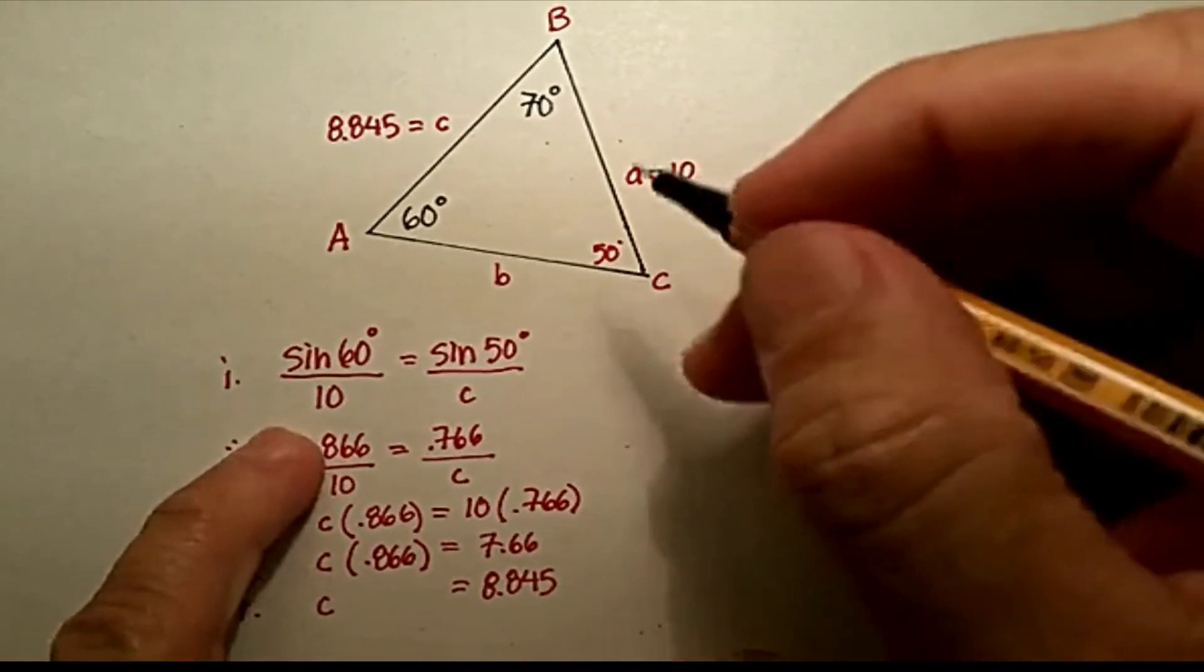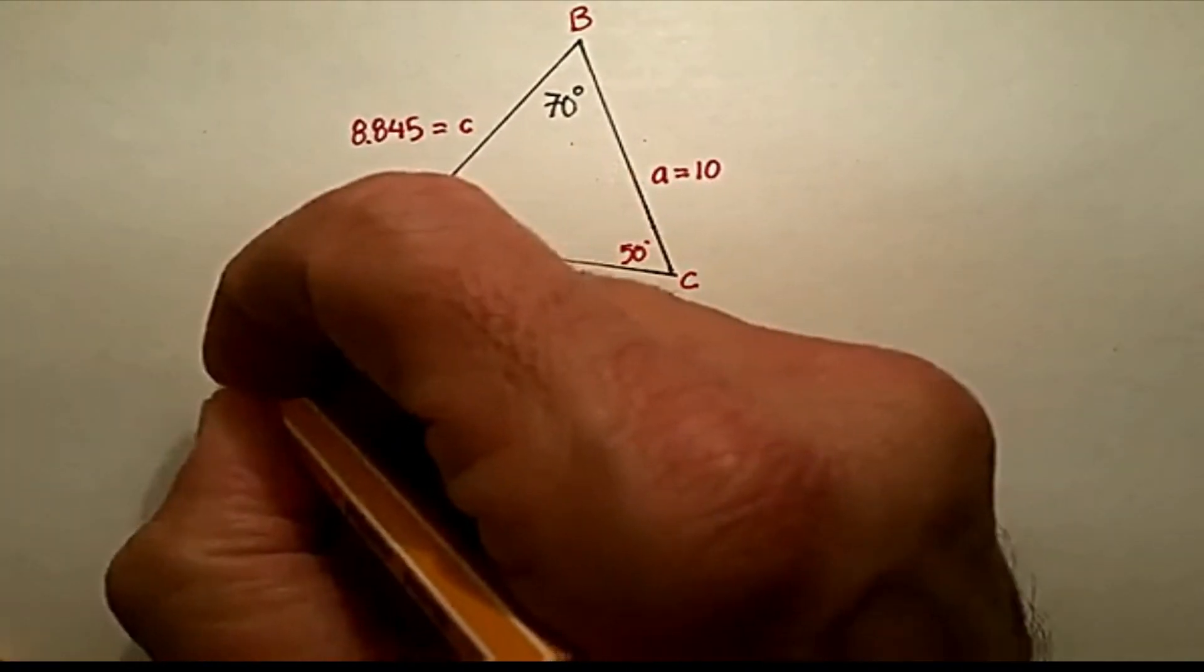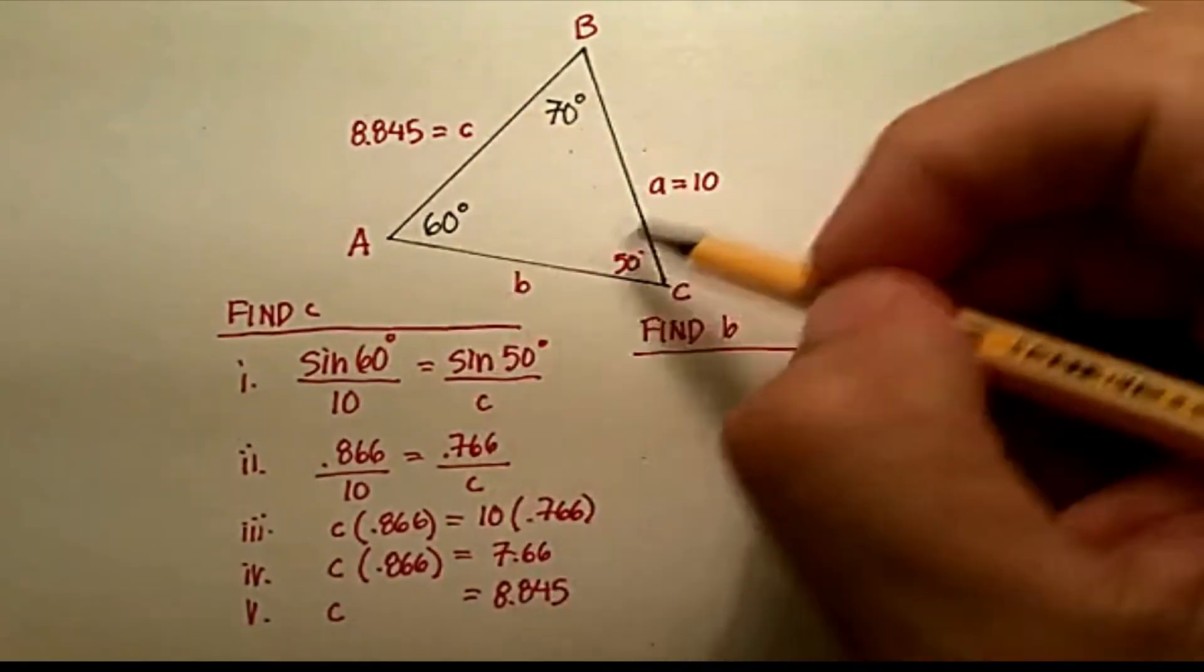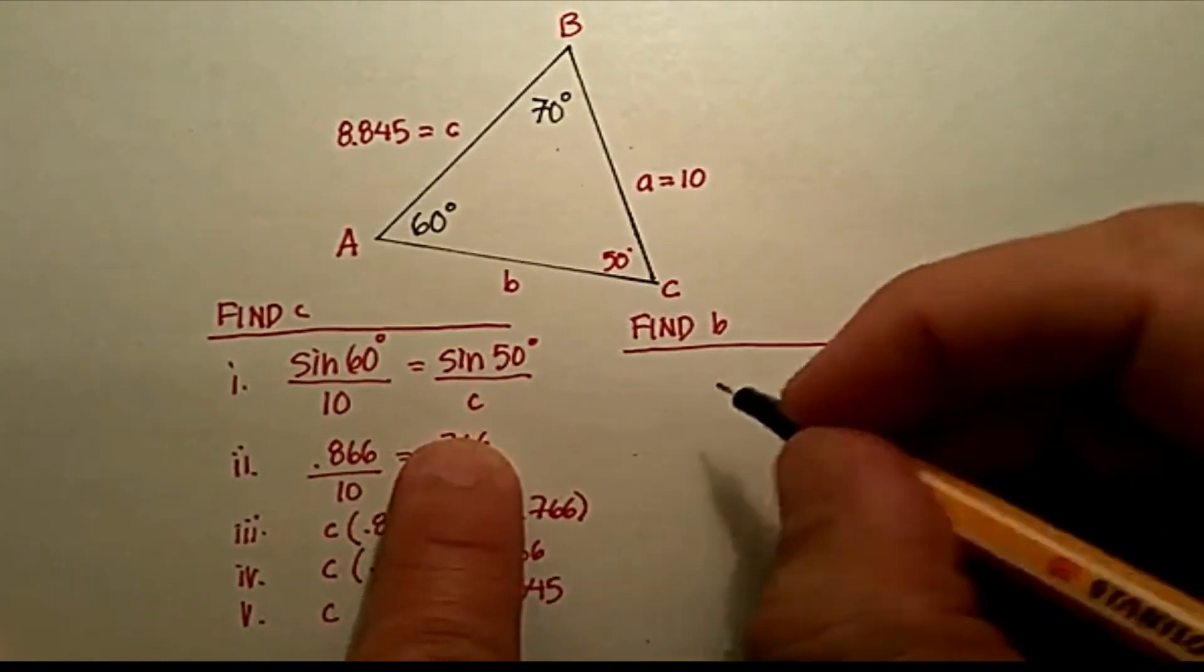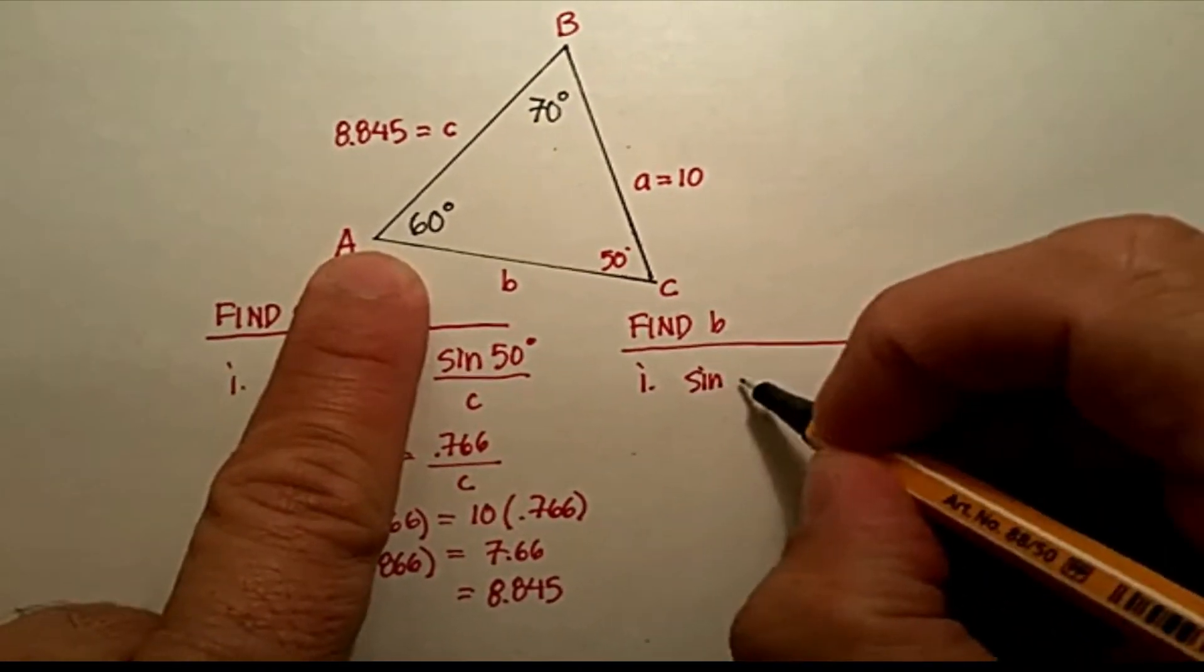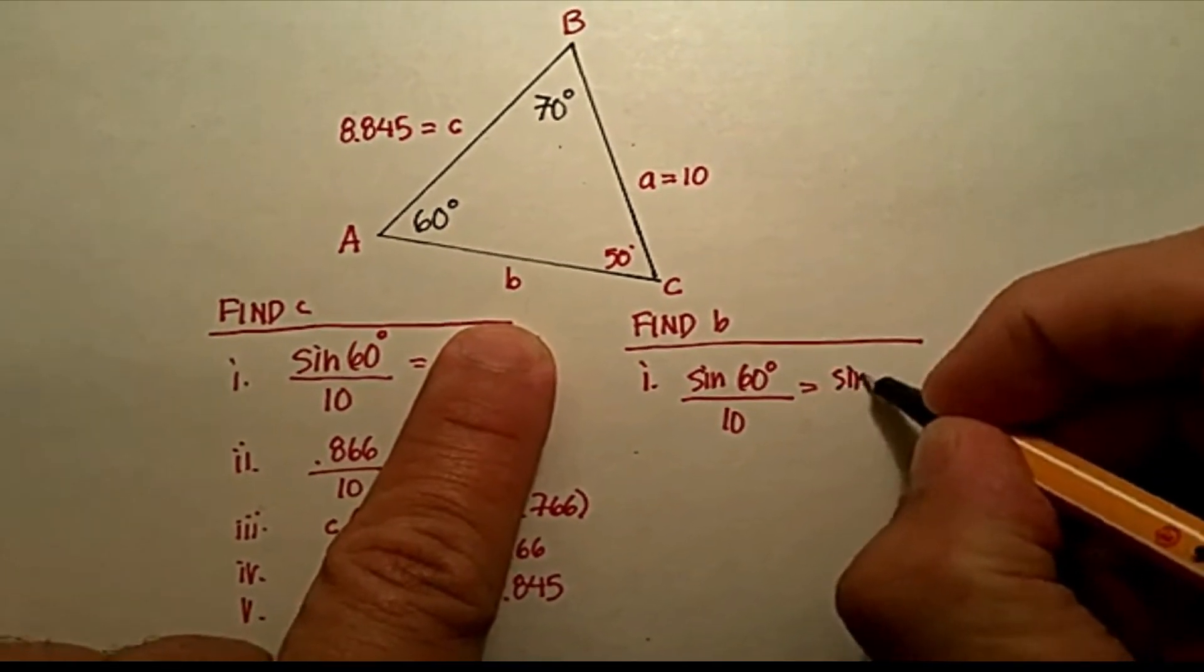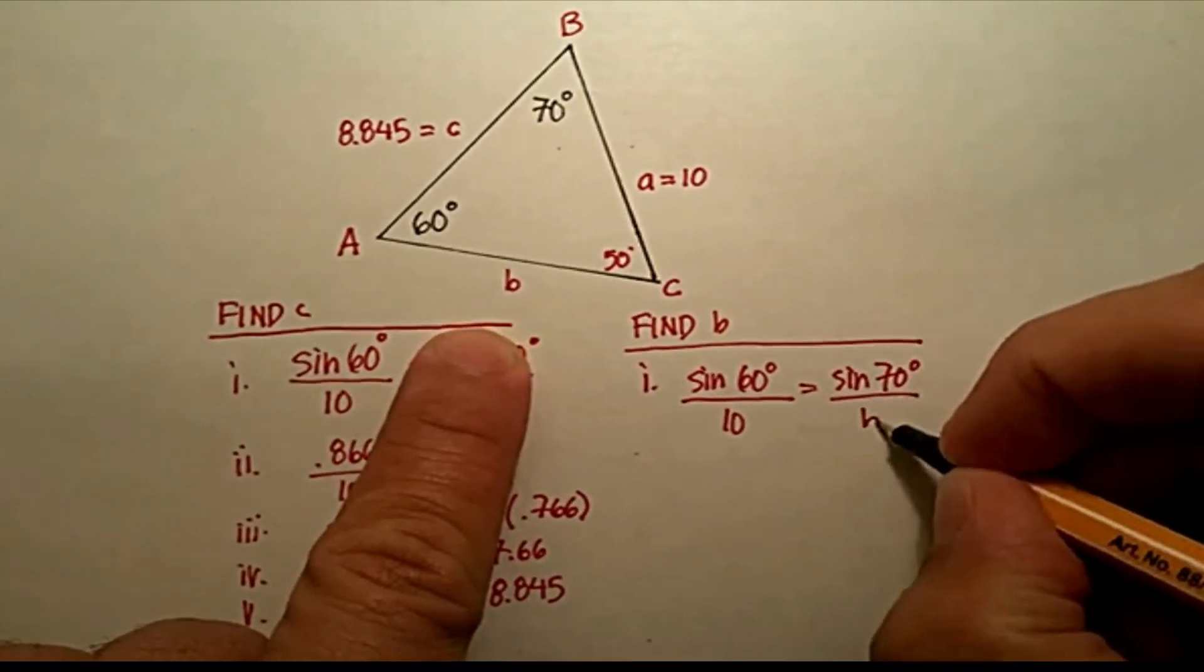Now, let's just go ahead and do the same thing with finding B. So, here we were finding C. And here we're going to find B. Remember, solving for a triangle means you're solving for all the angles and all the sides. So, let's find B. Again, we can use whatever ratio we want to do. So, let's just go with B. Let's go with the sine of 60 over 10 should be proportionate to the sine of 70 over our unknown, which is B.